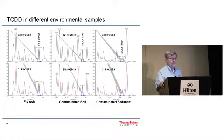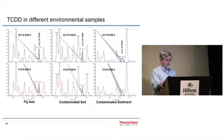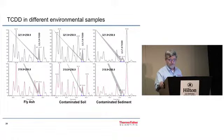Here's the tetra in some different types of samples. Fly ash, soil and sediment samples. And you can see the transitions used for each one of those. The first one is the quantitation ion. The other one is the confirmation ion.